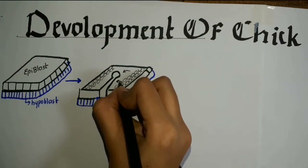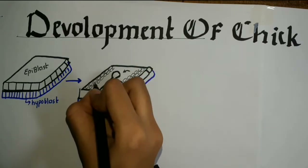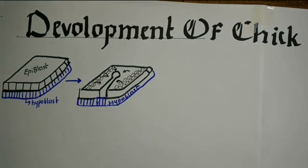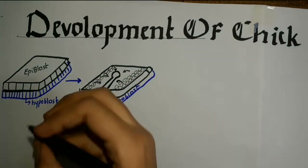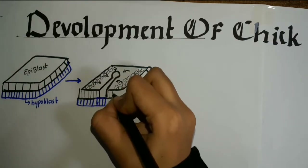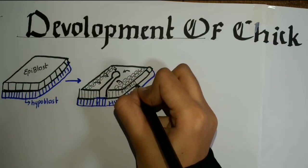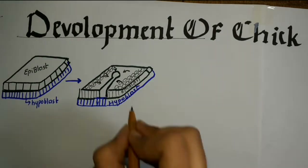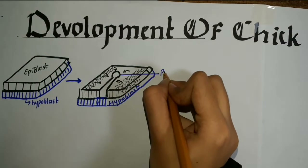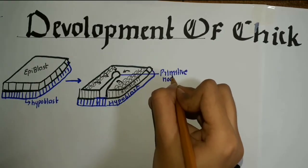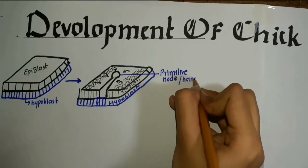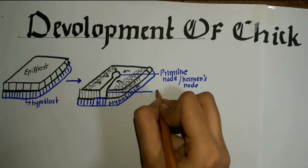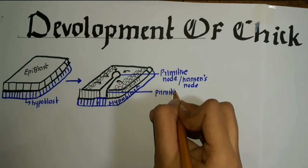With the help of arrows, I am showing how cells move inside from all directions — from the left, from the right, from above — going to the primitive node, and from below going to the primitive streak, which is the streak-like area. The upper rounded portion is called the primitive node, also called Hansen's node, and the lower streak-like portion is called the primitive streak.